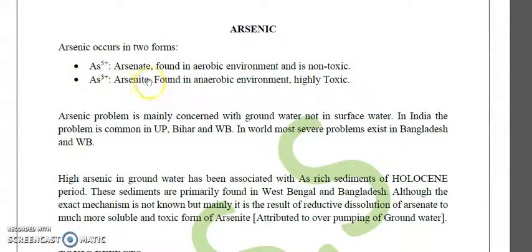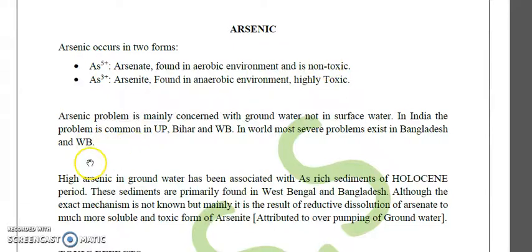As³⁺ (arsenite) is found in anaerobic conditions and is much more toxic. As⁵⁺ (arsenate) is found in aerobic environments and is non-toxic. Oxidation occurs in aerobic conditions (presence of oxygen) and reduction occurs in anaerobic conditions (absence of oxygen). For example, As⁵⁺ gains two electrons to get converted into As³⁺ under anaerobic reducing conditions.